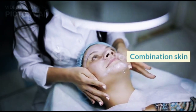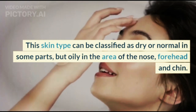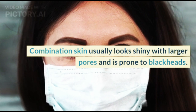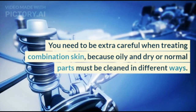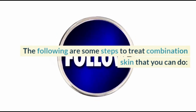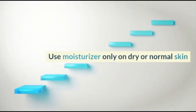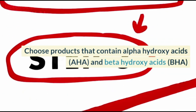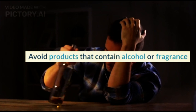5. Combination skin. This skin type can be classified as dry or normal in some parts, but oily in the area of the nose, forehead, and chin. Combination skin usually looks shiny with larger pores and is prone to blackheads. You need to be extra careful when treating combination skin, because oily and dry or normal parts must be cleaned in different ways. Use special care products for oily skin on oily areas, and use moisturizer only on dry or normal skin. Choose products that contain alpha hydroxy acids (AHA) and beta hydroxy acids (BHA). Avoid products that contain alcohol or fragrance.